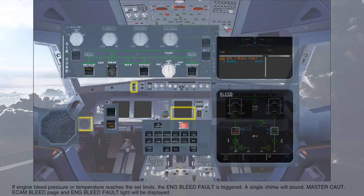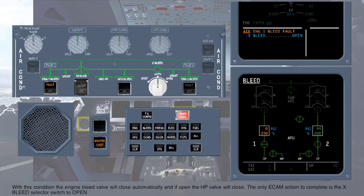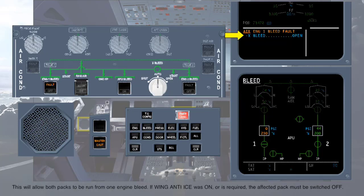If engine bleed pressure or temperature reaches the set limits, the engine bleed fault is triggered. A single chime will sound, master caution, ECAM bleed page, and engine bleed fault light will be displayed. With this condition, the engine bleed valve will close automatically, and if open, the high pressure valve will close. The only ECAM action to complete is the cross-bleed selector switch to open — this will allow both packs to be run from one engine bleed. If wing anti-ice was on or is required, the affected pack must be switched off.